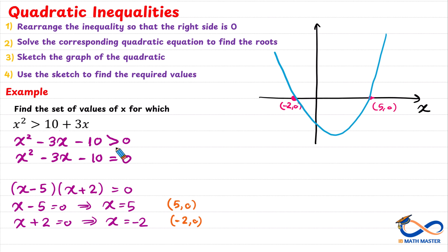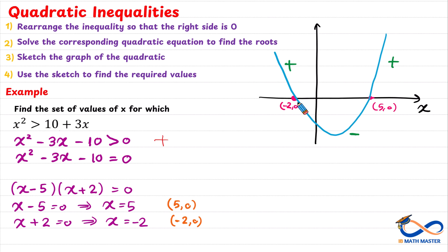Notice that we need our inequality to be positive or greater than 0. This quadratic represents the values of the quadratic inequality. The parts above the x-axis are positive values, and the part below represents negative values. It means for the x values in those regions, the inequality will be positive or negative respectively. Since we need it to be greater than 0, we will take only the positive parts. Solving the quadratic inequality means finding those values of x.